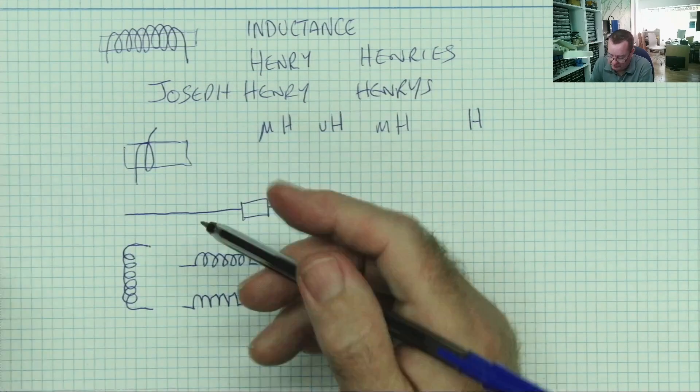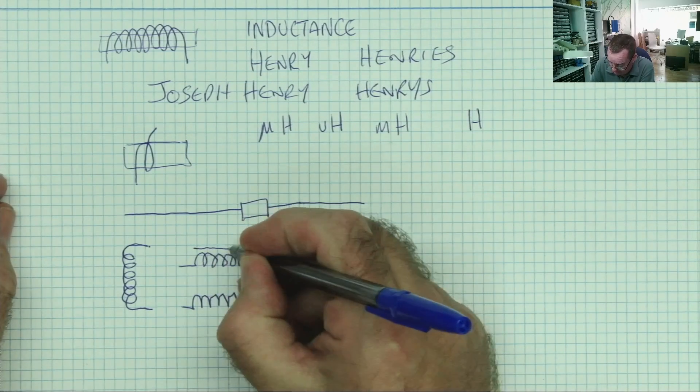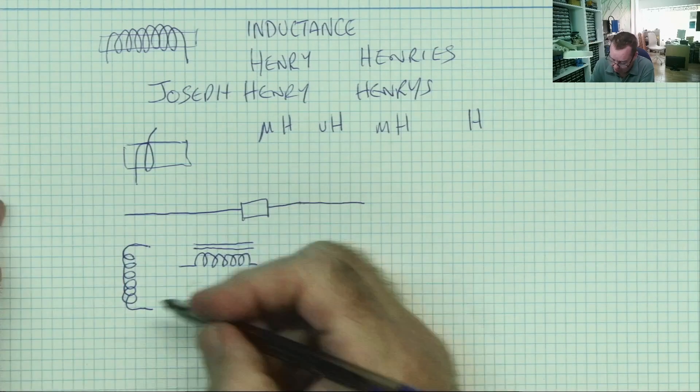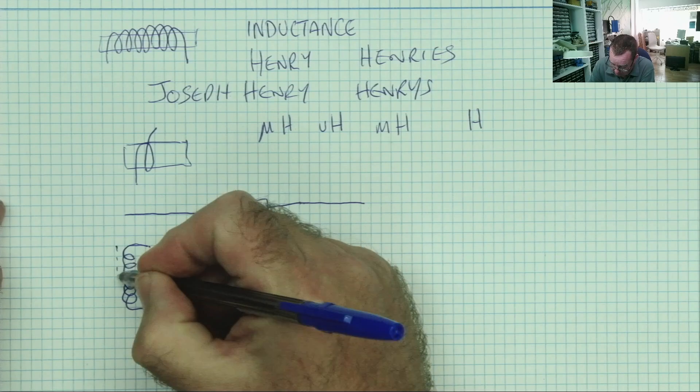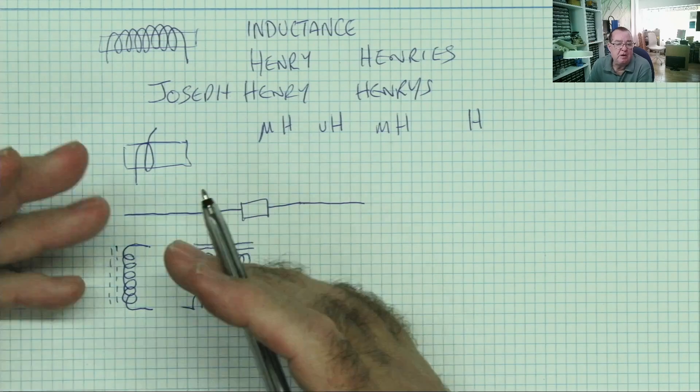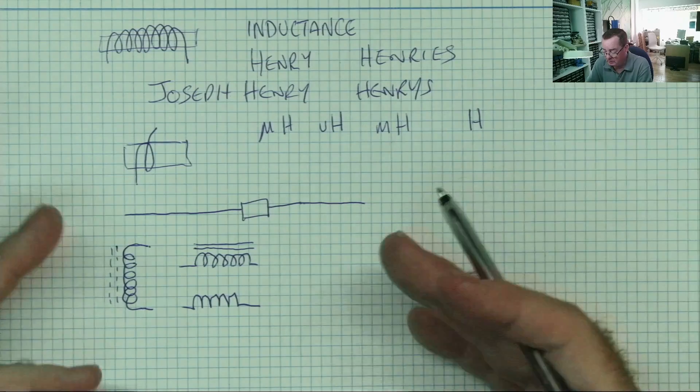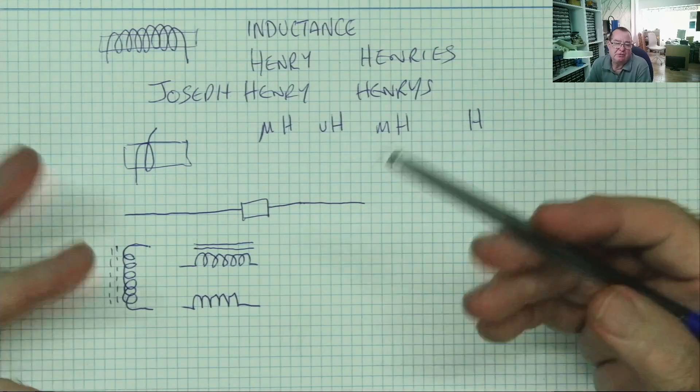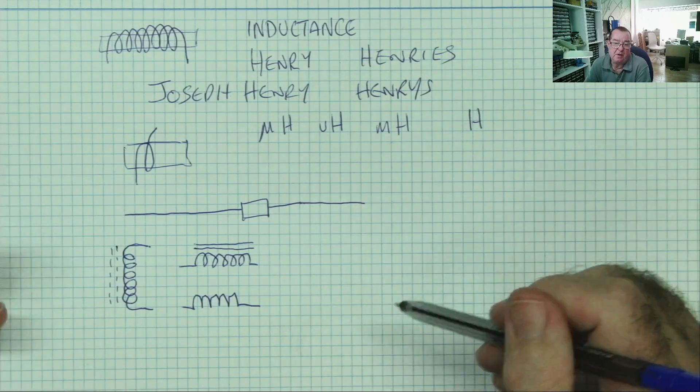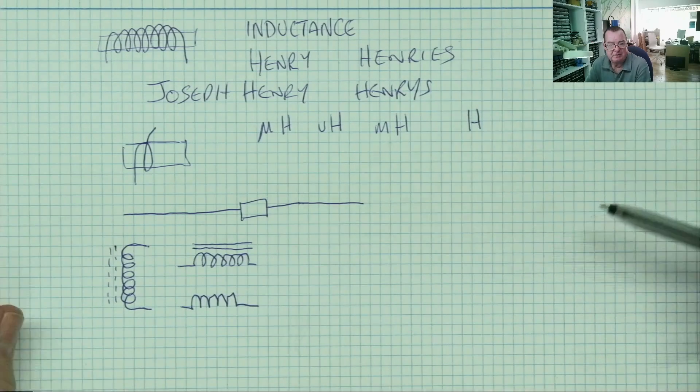And the core it's wrapped around, these symbols will vary, be represented by one or more solid lines like this. This normally means solid iron core. This normally means a ferrite core, this dust made from metallic oxide. So now we know what an inductor is, a piece of wire wrapped around the former, or passing through a former, or just a piece of wire. And we know the schematic symbols for an inductor. What do they actually do?